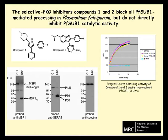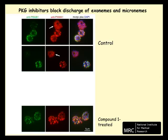The inhibitors of PKG do not interfere with the trafficking of SUB1 to exonemes, the subcellular organelles in which the protease is stored prior to its release into the parasitophorous vacuole. Nor do they interfere with the expression of SUB1 in parasites, as shown by these immunofluorescence images of schizonts that have been treated with compound 1 or compound 2 for several hours.